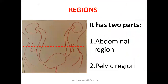The ureter can be divided into two regions: the abdominal region and the pelvic region. The abdominal region begins from the renal pelvis down to the pelvic brim, and it is this region that is contained within the abdominal space. The pelvic region begins from the pelvic brim down to the entrance of the urinary bladder, and this is the part of the ureter seen within the pelvic cavity.